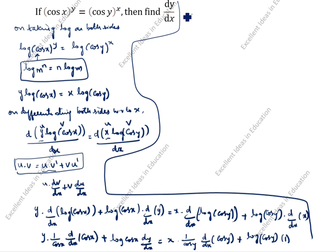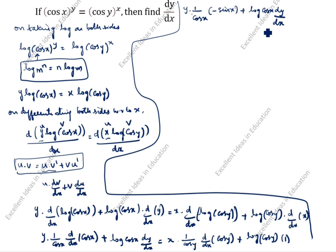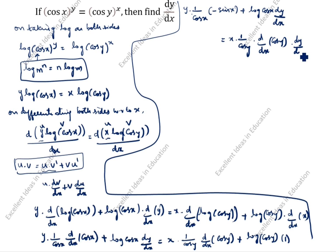Next step: y into 1 by cos x — the differentiation of cos x is minus sin x — giving minus sin x, plus log of cos x times dy by dx. On the right side, equal to x into 1 by cos y times d by dx of cos y. Here x is present, so we differentiate cos y with respect to y, giving d by dy of cos y times dy by dx, plus log of cos y.